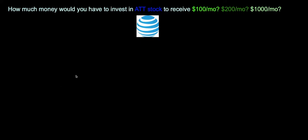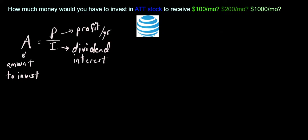So the question is how much money would you have to invest in AT&T stock to receive $100 a month, then $200 a month, and then $1,000 per month. And the formula that we're going to use here is to calculate the amount we have to invest. We're going to look at what is the profit we want to make per year, and we're going to divide that by the dividend interest.